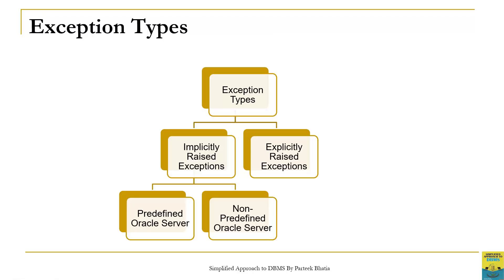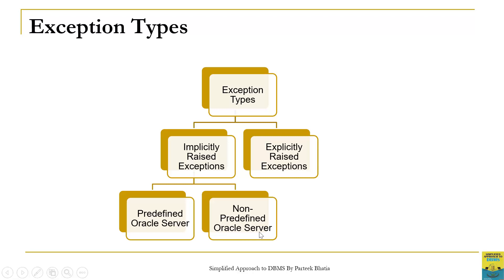Now let us discuss the types of exceptions. There are two kinds: implicitly raised exceptions and explicitly raised exceptions. Implicitly raised exceptions are raised automatically by the server due to runtime errors, while explicitly raised exceptions are raised by the user. Implicitly raised exceptions are further of two types: predefined Oracle server errors and non-predefined Oracle server errors. We will discuss implicitly raised exceptions in the next video session.